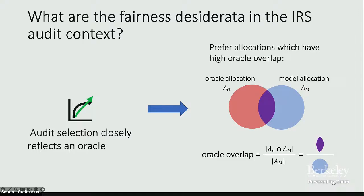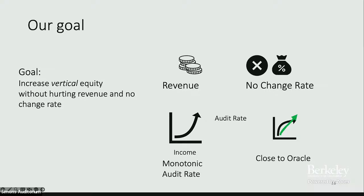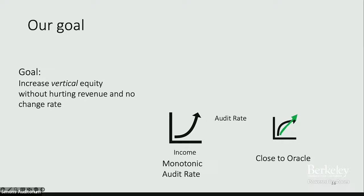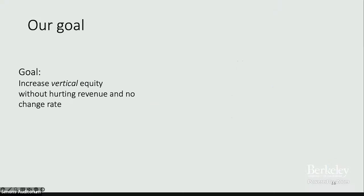We also want audit selection to closely reflect the allocation of an oracle — a model that knows who misreported and how much everyone misreported, and selects individuals in order of how much they misreported on their taxes. We measure how much a given model's allocation corresponds to that of the oracle by measuring the overlap in their allocations: how many people they audit in common over the total number of audits. So our goal is more monotonic allocations close to the oracle, with high revenue and a low no-change rate.